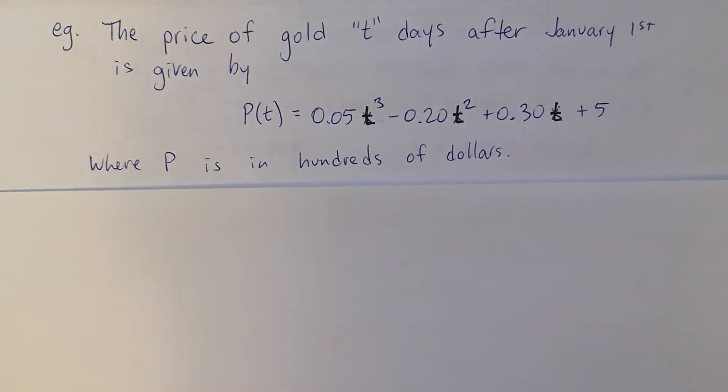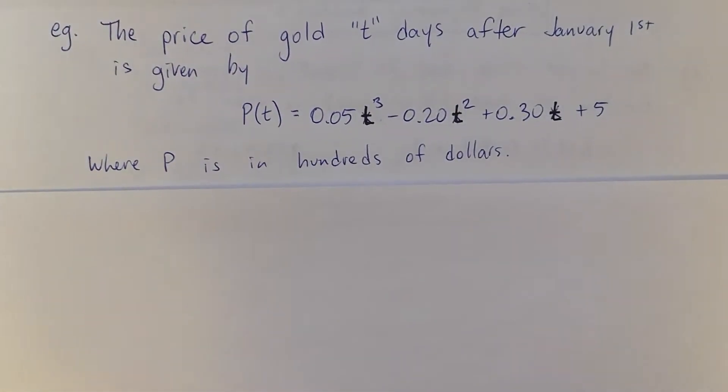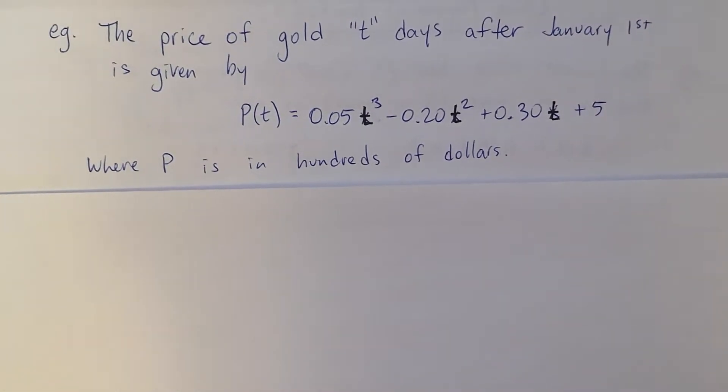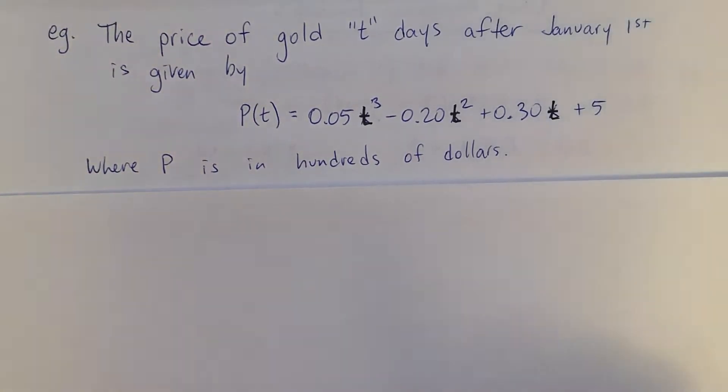Hi again. I've set up another example here where we're definitely going to need our calculator. I've come up with this equation that's supposed to model the price of gold T days after January 1st. Unfortunately I originally put X's in there, so I've tried to use darker ink to make it look like T. I hope that's not confusing.